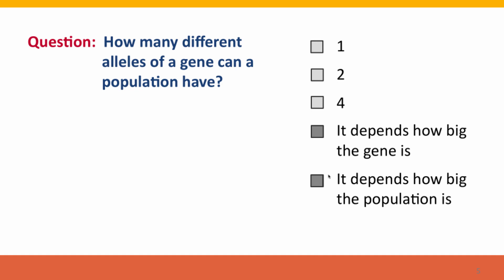The right answers are: well, it depends how big the gene is, and it depends how big the population is. Because for a big gene, there are potentially four different alleles for every base in that gene — so that's many thousands of alleles if the gene is a thousand base pairs long. If the population is very small, the population can only have two alleles per person.